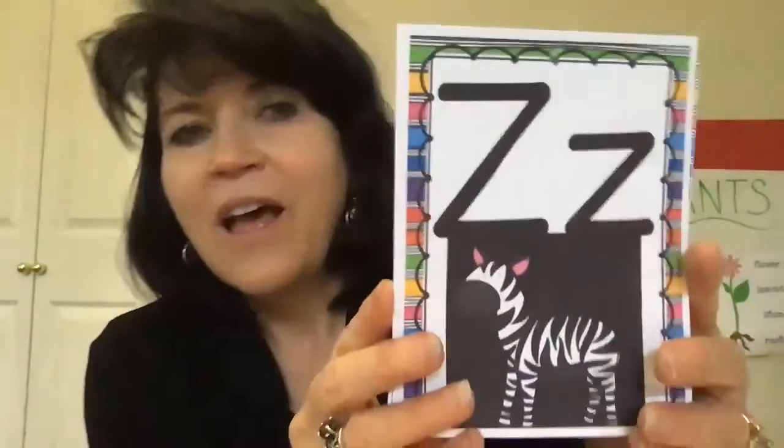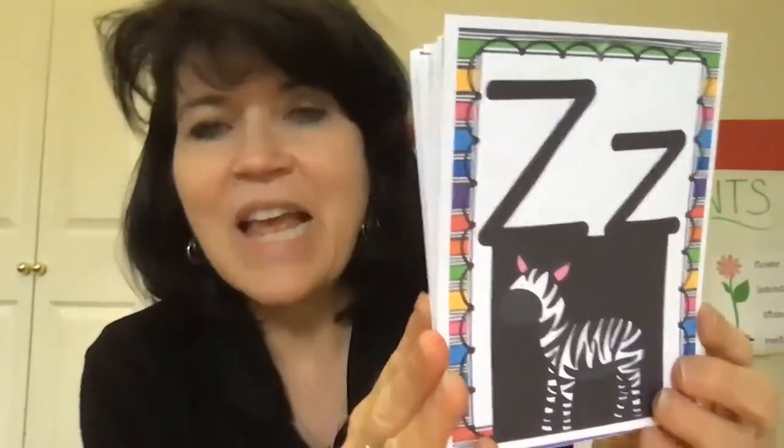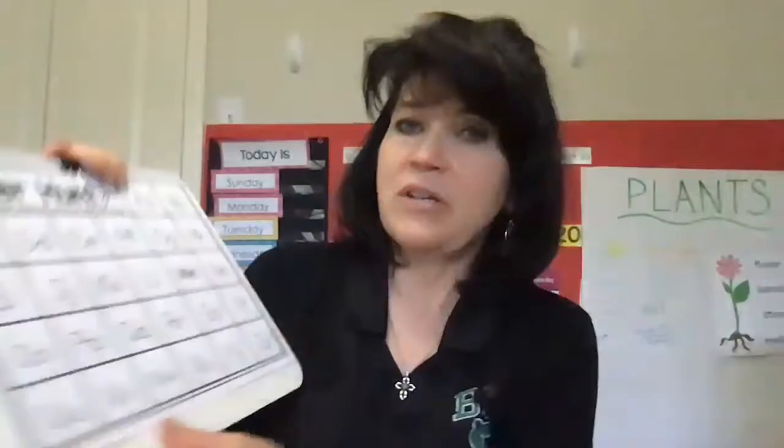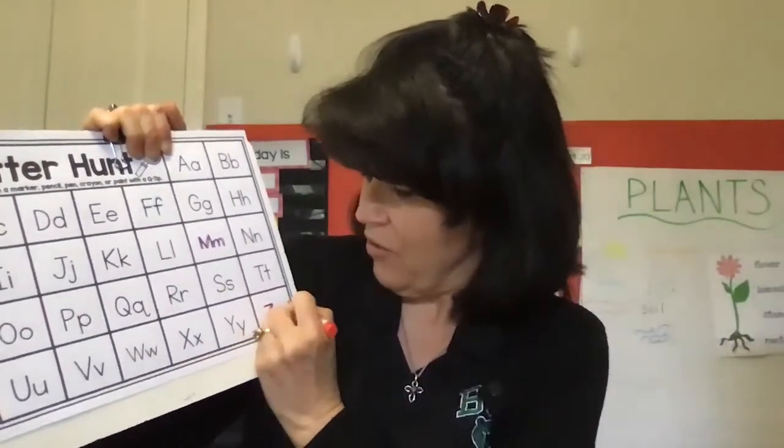Here comes our next letter. What letter is this? That's the letter Z. Z says 'z' as in zebra. Find your letter Z and pick any color you want to mark your Z — trace your uppercase and your lowercase Z. Good job.